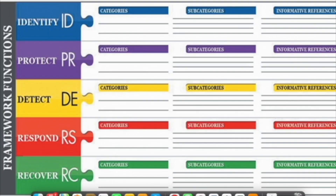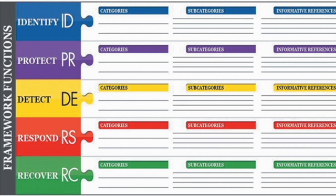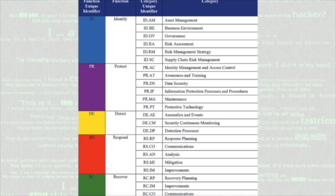The subcategories include identity ID, protect, detect, respond and recover, each with a unique identifier assigned to one of the five fundamental functions. For example, one category under the function identify is asset management. A subcategory of asset management is physical devices and systems within the organization. For that subcategory, the framework offers informative references that guide the physical devices that are used — such as how to manage your inventory.